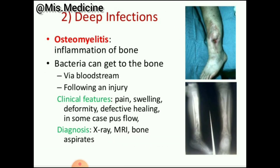Deep infections include osteomyelitis, which is inflammation of the bone. Bacteria can get to the bone by the bloodstream or following an injury. Clinical features of osteomyelitis are pain, swelling, deformity, defective healing, and in some cases pus. It can be diagnosed by X-ray, MRI, and bone aspirates.